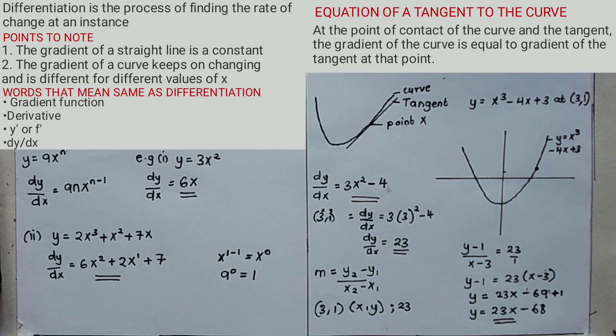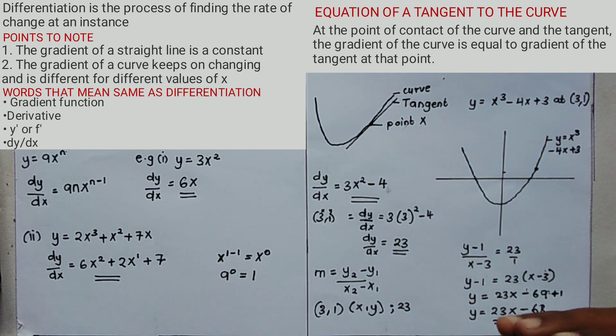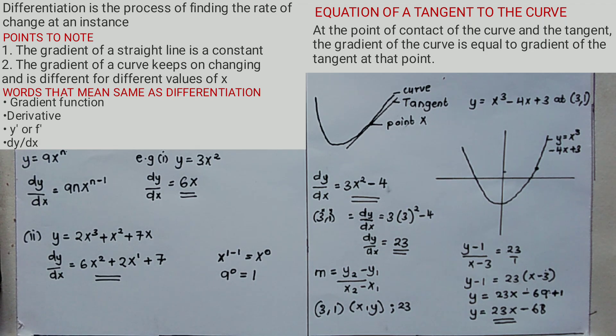There are 4 steps involved in finding the equation of a tangent. If you are carefully following, you will realize there are 4 steps involved. That's the end of our lesson today.